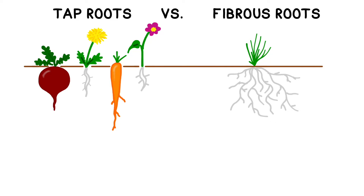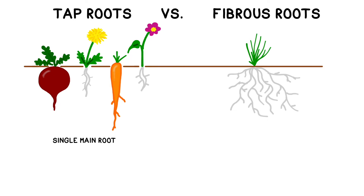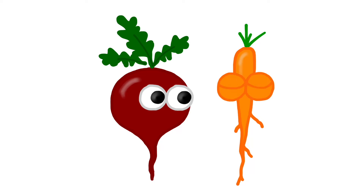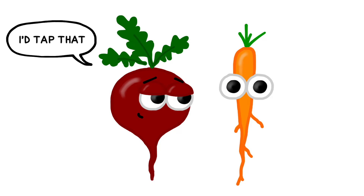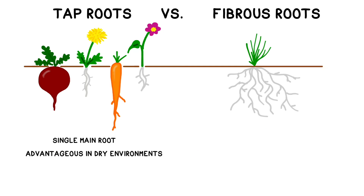There are two major types of roots: tap roots and fibrous roots. Tap roots have one major root that grows straight down, sometimes with a few smaller branches protruding off of it — it looks a bit like a carrot. In fact, carrots, beets, dandelions, parsnips, and jicama are all examples of tap root plants. Tap roots are advantageous in dry environments because they can reach far down into the soil to reach water.